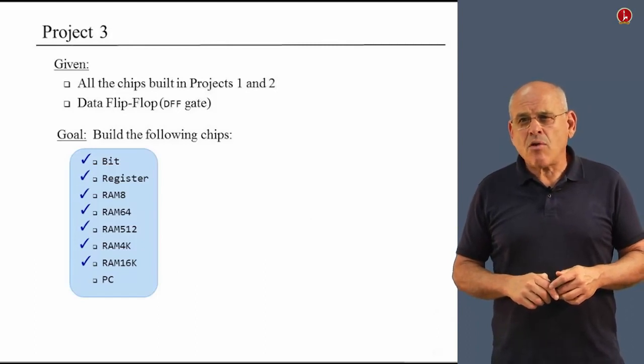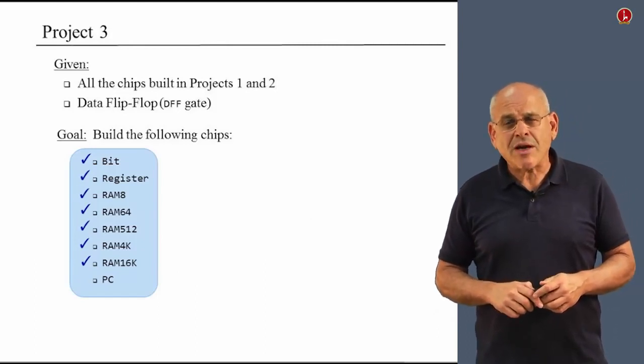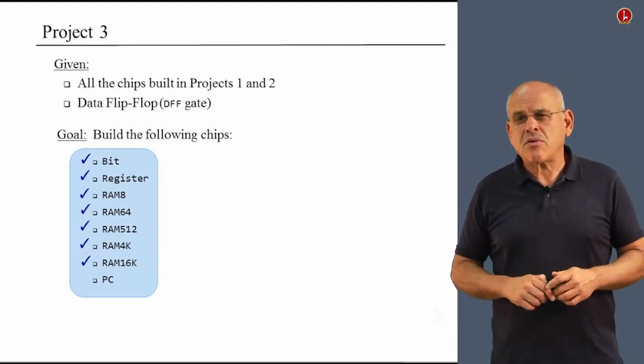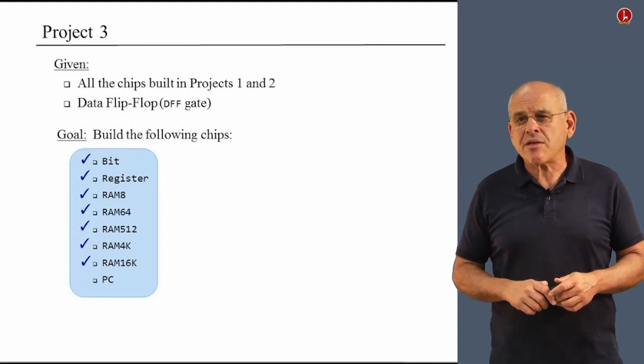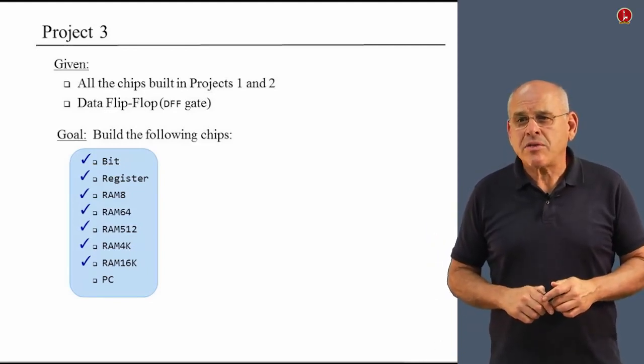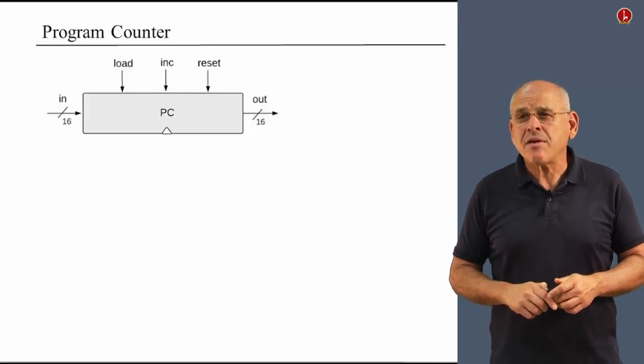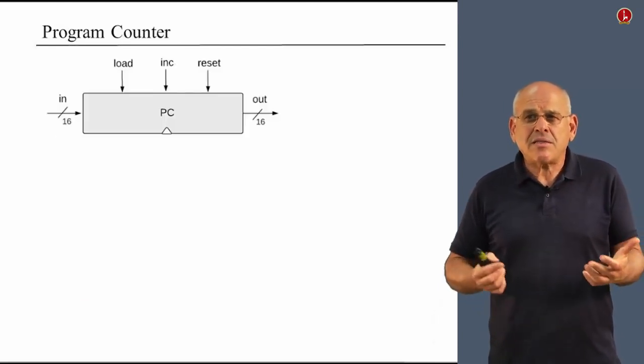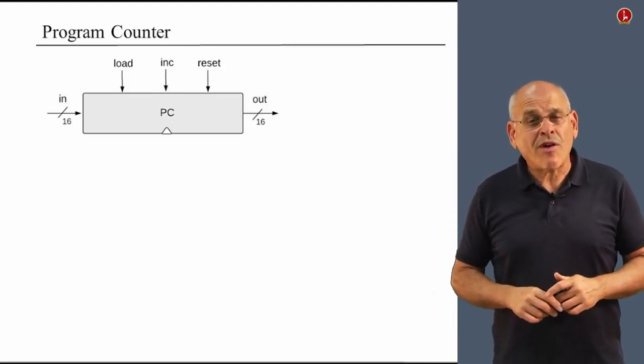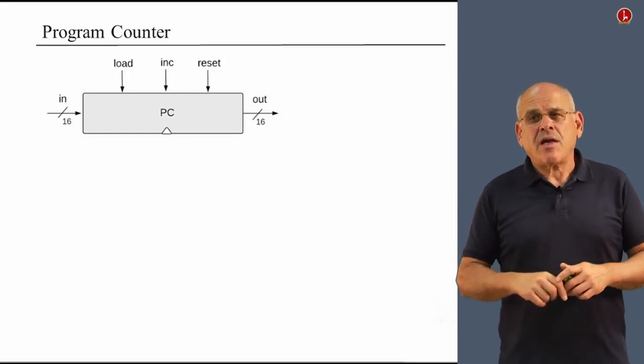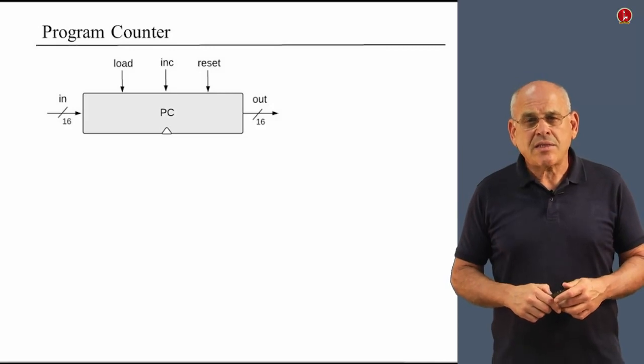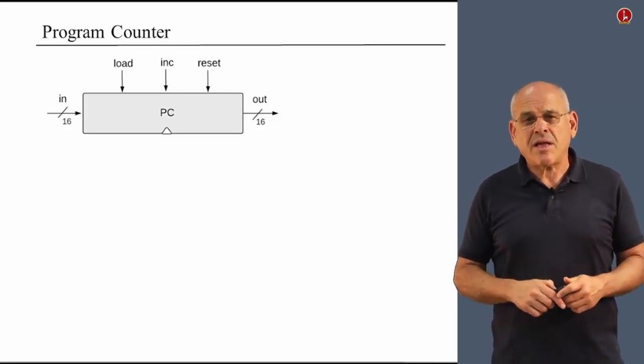So this basically completes the construction of the RAM devices, and we move on to construct the last chip in this project which is something completely different. It's a program counter, which is just a fancy name for a counter. In fact, it's not a fancy name, it's called program counter because later on in the overall construction of our computer, it will serve as a program counter. But effectively, it's just a counter. It has an input value, it has an output value, and three control bits.